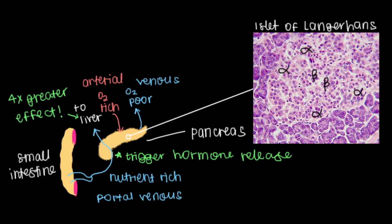So alpha cells on the outside. And the key thing to remember here is that your beta cells release insulin while the alpha cells release glucagon.